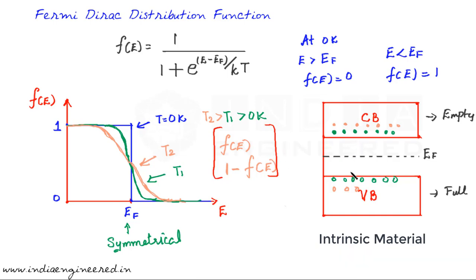One more important point: in the energy band gap there are no electrons, so there is no point substituting energy values from the band gap into the Fermi-Dirac function. Whenever we actually calculate the probability, we should substitute only those energy values that correspond to available states — that is, energy levels in the conduction band or the valence band, not in the energy band gap.